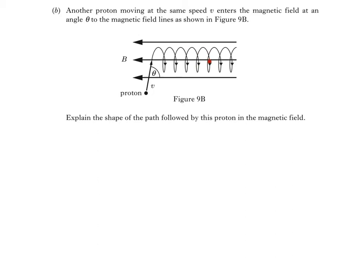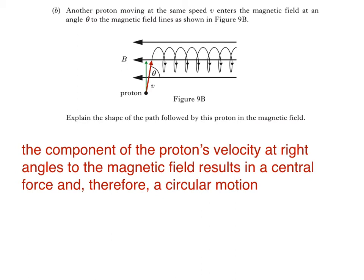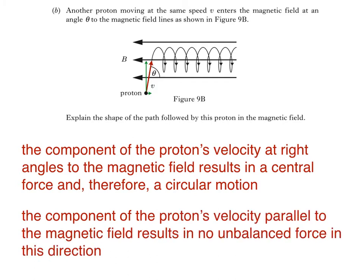The proton has a circular motion as before, but it also progresses from left to right, parallel to the magnetic field. This arrow indicates the proton's velocity vector on entering the magnetic field. It has a component perpendicular at 90 degrees to the magnetic field, and this component results in a central force, and therefore accounts for the proton's circular motion. It also has a component parallel to the magnetic field. The proton experiences no unbalanced force in this direction, which is why it continues moving from left to right. It's the combination of these two effects that results in the proton's helical path.